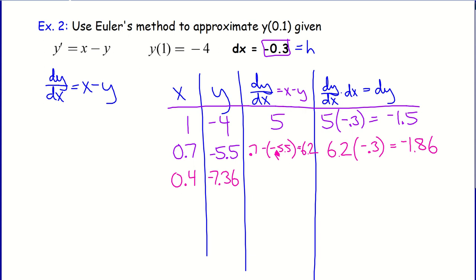And then I need to do this one more time because I'm looking for an approximation for the y value when x equals 0.1. So I'll repeat the process. I would have the x minus the y, so 0.4 minus negative 7.36. And that gives me 7.76. So I'd have a slope of 7.76 units that I am going to be following leftward negative 0.3 units. And that would be times negative 0.3. And that would give me a change in y of negative 2.328 units. So when x arrives at 0.1, then the y arrives at negative 9.688.